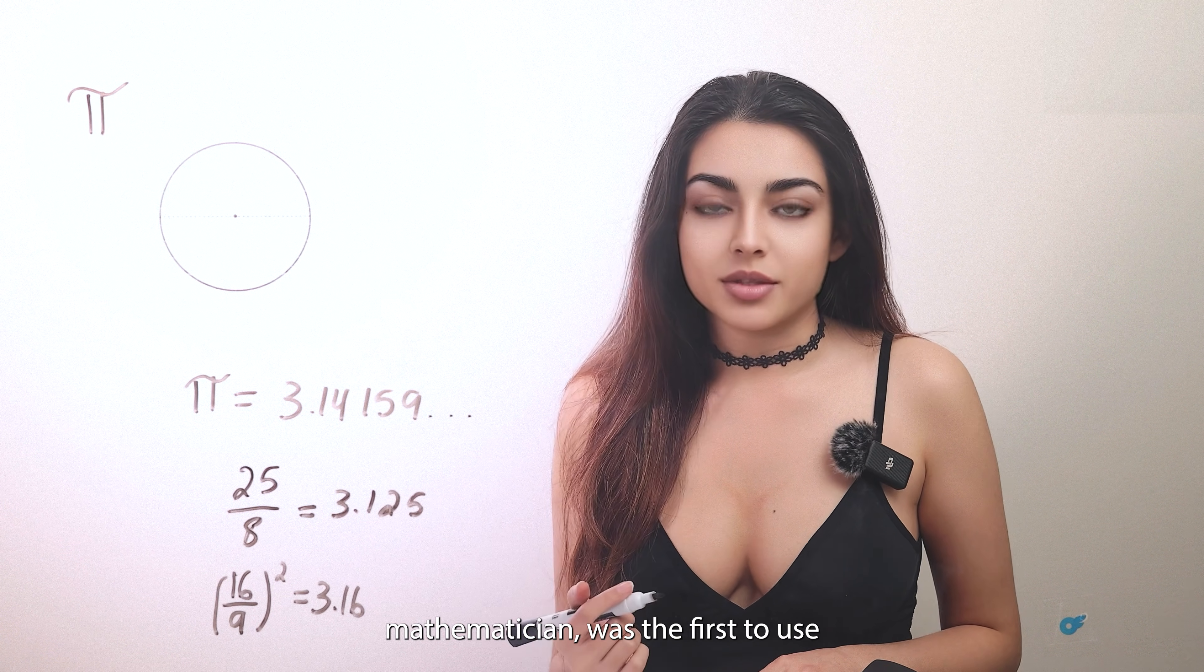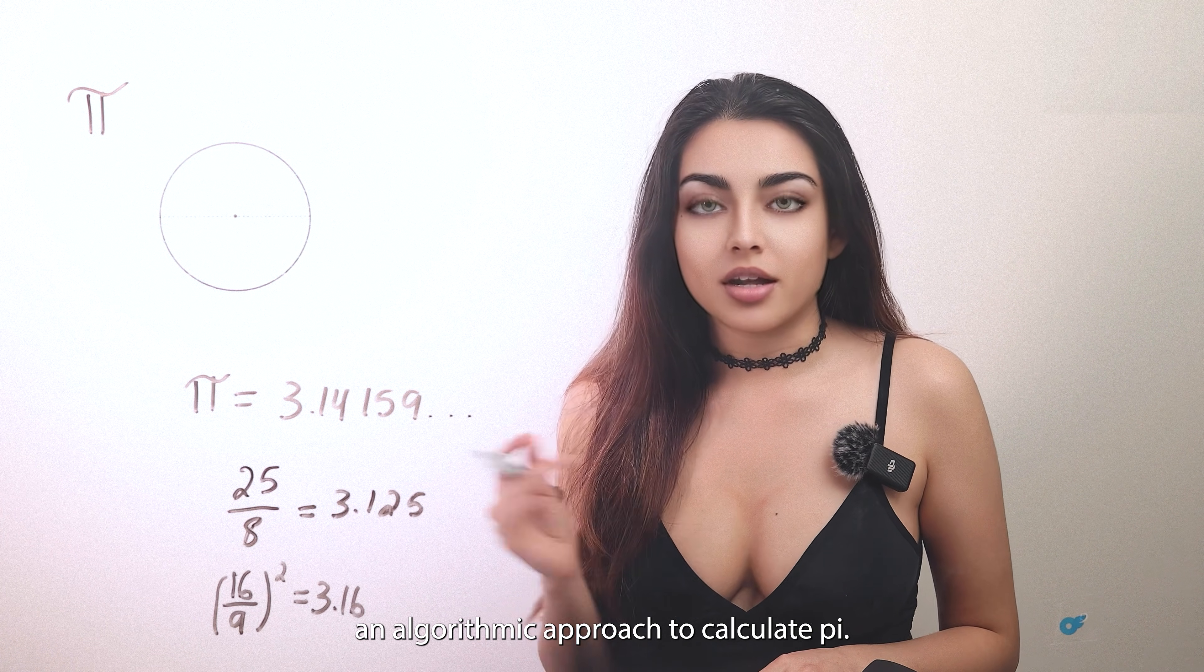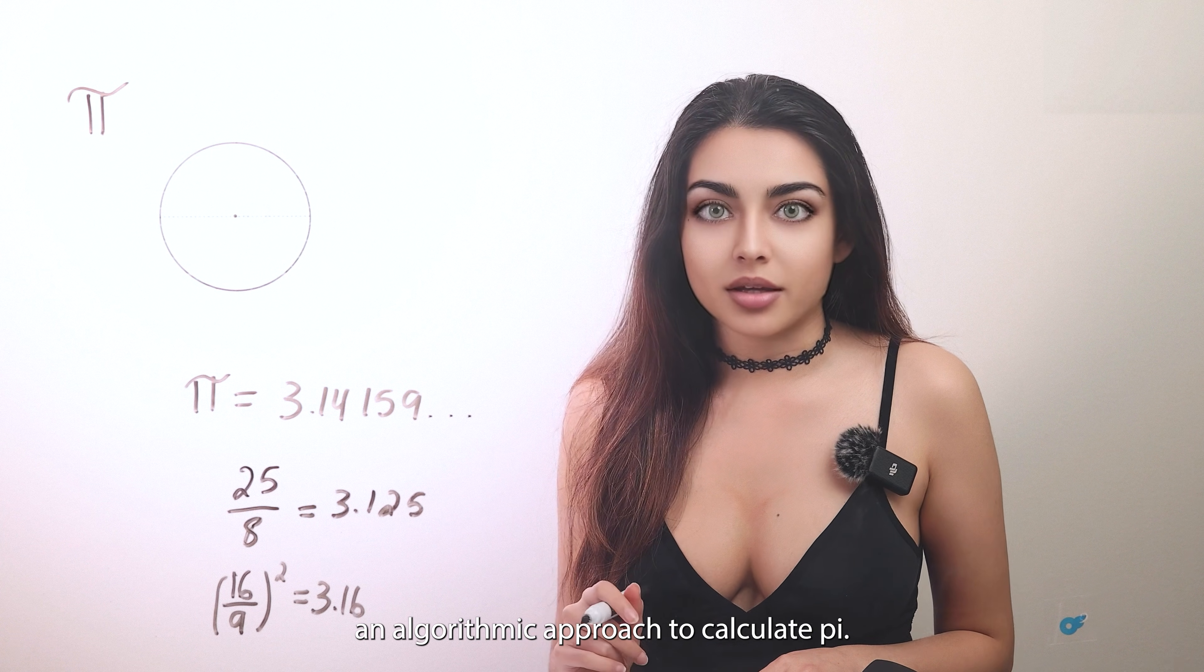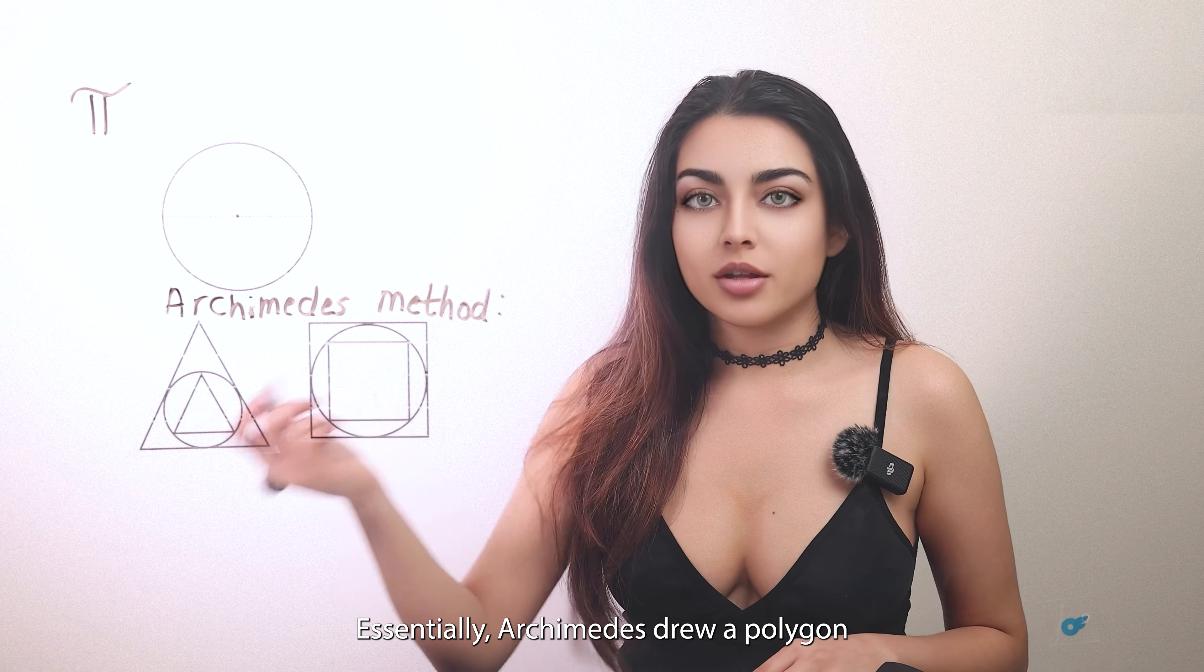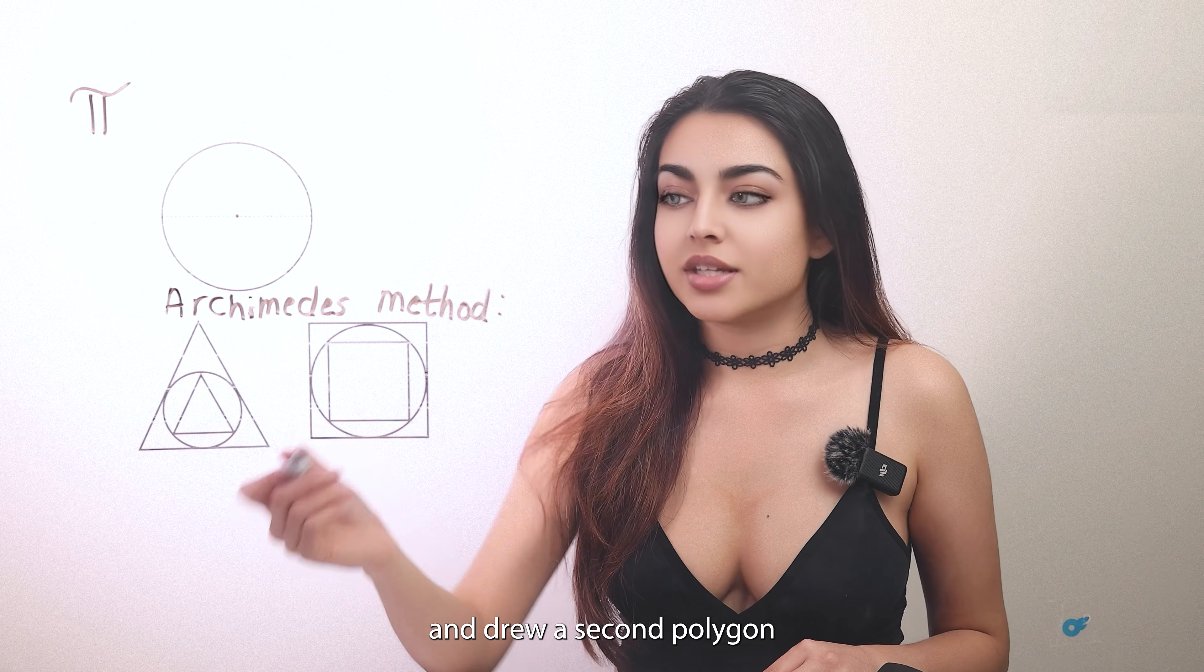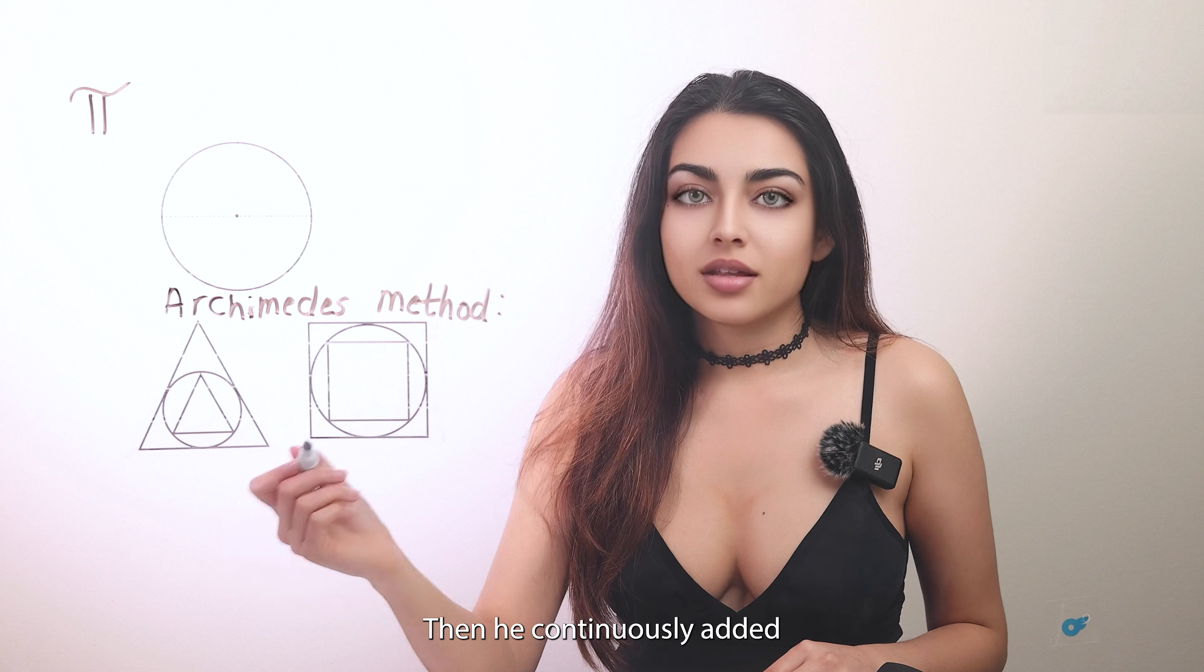Archimedes, a Greek mathematician, was the first to use an algorithmic approach to calculate pi. Essentially, Archimedes drew a polygon inside a circle and drew a second polygon outside of the circle.